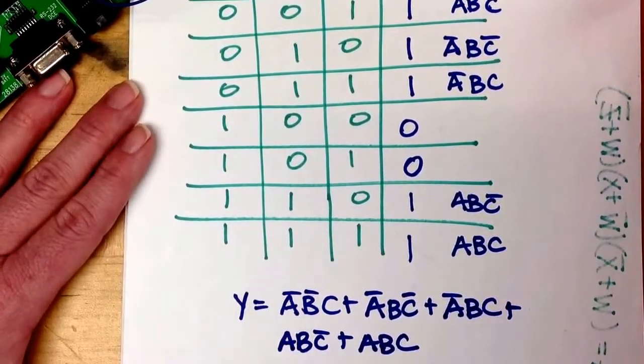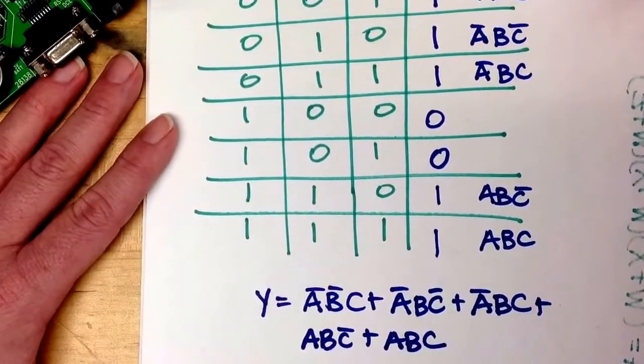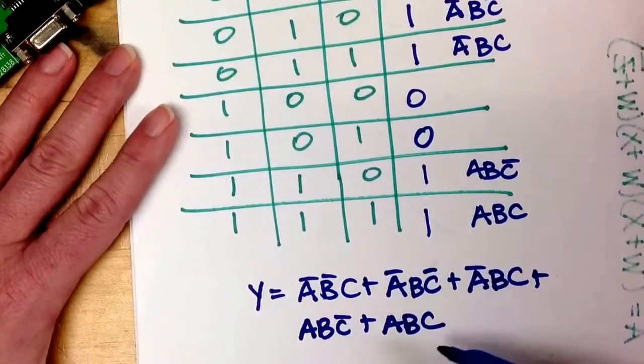So I hope that helps and gives you a little information on how to go from POS to truth table and then to SOP.